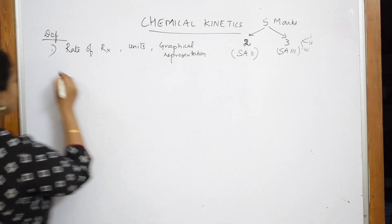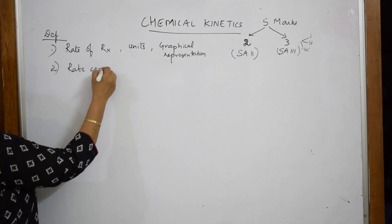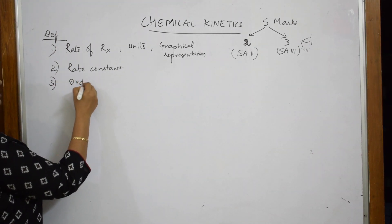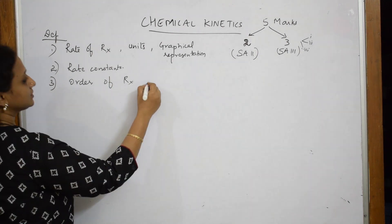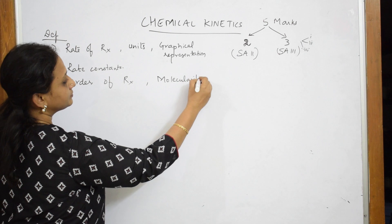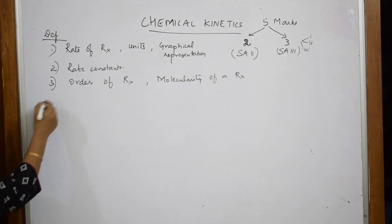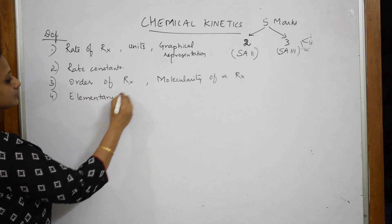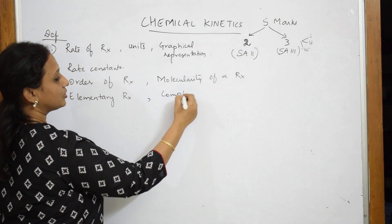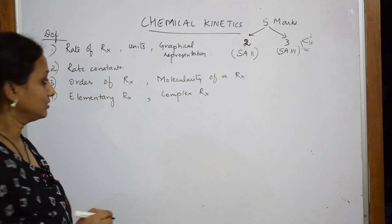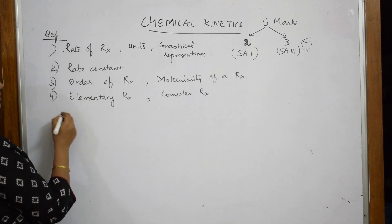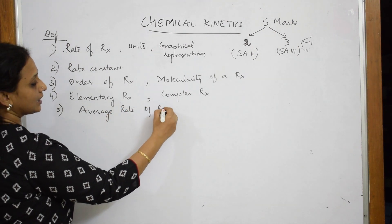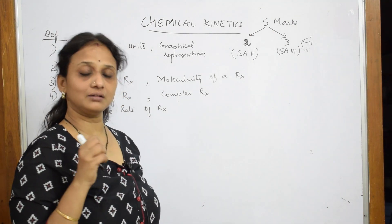After rate of a reaction, you will study rate constants, then order of a reaction, and molecularity of a reaction. The definition part also includes elementary reactions and complex reactions. You may also be asked the meaning of average rate of a reaction.